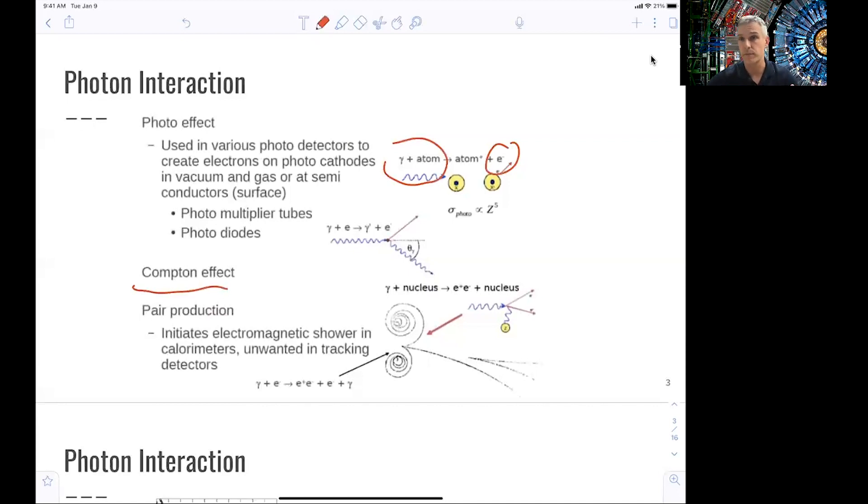So what happens in a calorimeter, and we'll talk about this more later, is that an incoming photon or electron causes this photon to convert into pairs of electrons and positrons. Then there is this cascade of electrons and positrons and additional photons being produced. In tracking detectors, this is unwanted. So we therefore build tracking detectors rather thin. We don't want to have this confusion of additional charged particles.